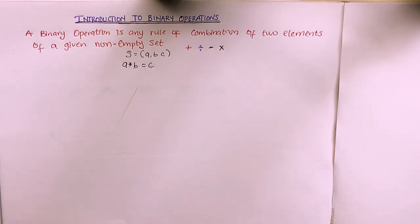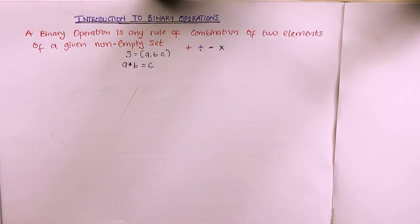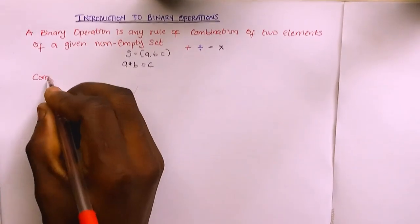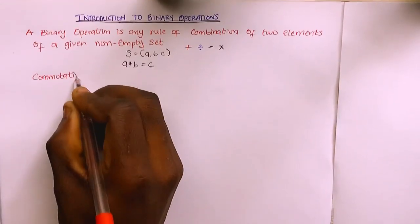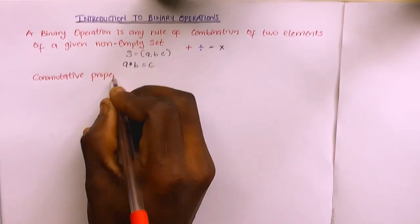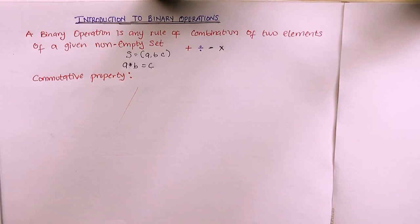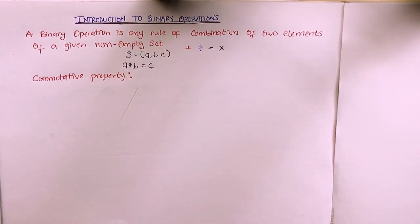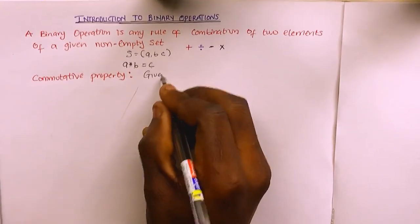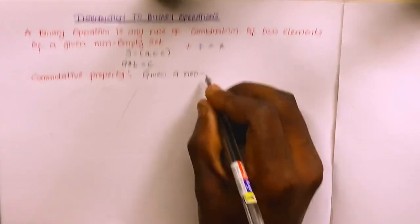Another thing we need to know in relation to binary operation is some properties — rules that guide the combination of two elements together. The first is the commutative property. As far as commutative property is concerned, let's say we are given a non-empty set S.